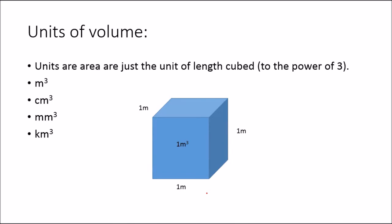Units of volume — you're probably going to see a pattern here — are the unit of length cubed, so to the power of 3. One cubic meter, for instance, is 1 meter deep by 1 meter wide by 1 meter tall. We can also have cubic centimeters and cubic millimeters. Cubic kilometers is a ridiculously big volume.